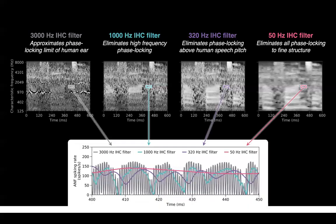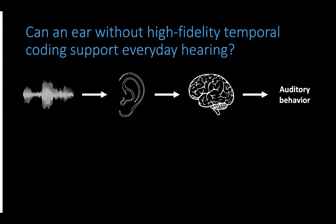This manipulation decreases the temporal precision of phase lock spike timing, and the question we're interested in is, can an ear without high-fidelity temporal coding still support everyday hearing?